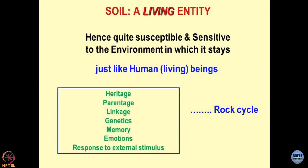Soil is a living entity and hence it is quite susceptible and sensitive to the environment in which it stays — we call these sensitive soils. Several examples show how the environment influences the characteristics of soils. You change the pressure and temperature conditions, depressurization occurs, something starts leaking out. Like the human body — emotions change, somebody says something, and your pore pressure starts dissipating through your eyes. So environmental influence is very, very important.